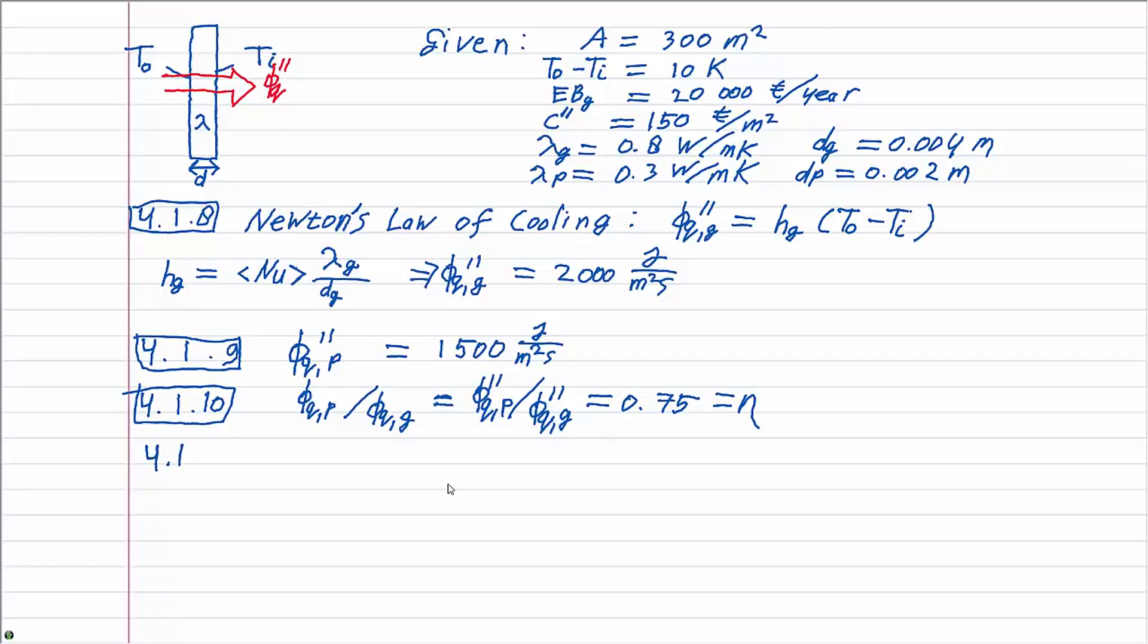The break even point is reached when the money saved by converting to plastic is equal to the initial investment costs. The investment is the total window area multiplied by the cost per square meter and it equals 45,000 euros.